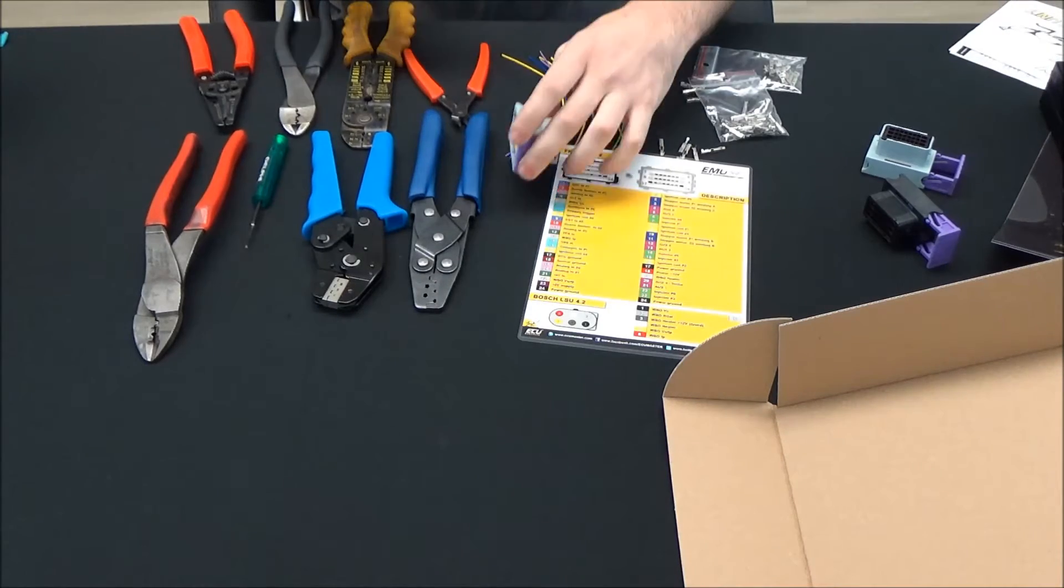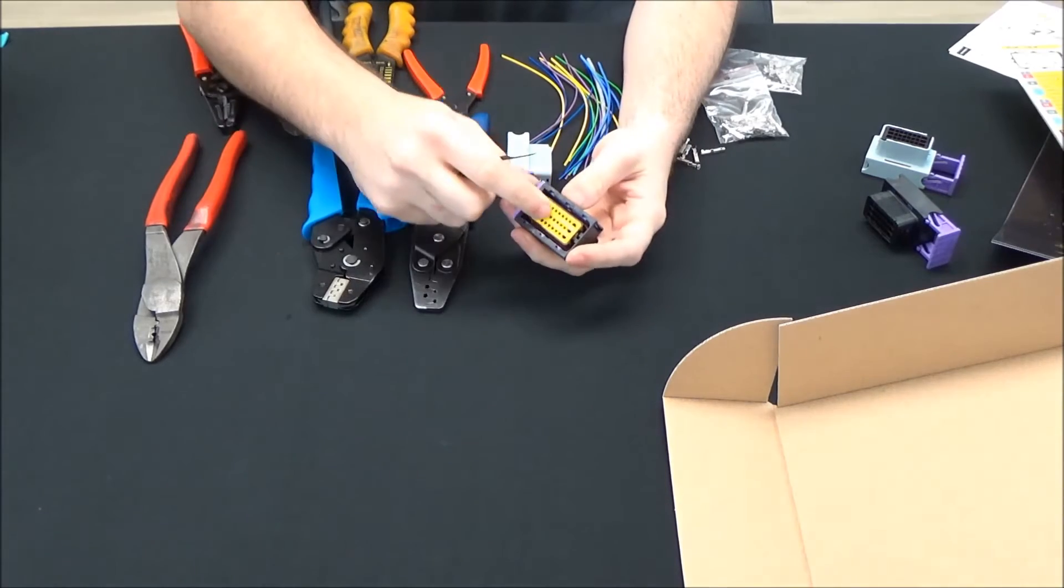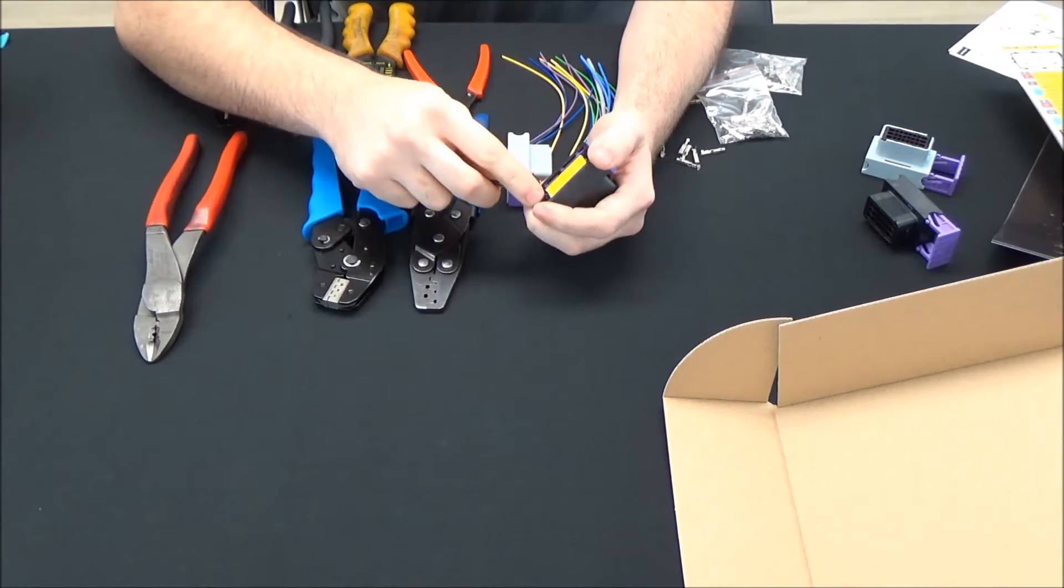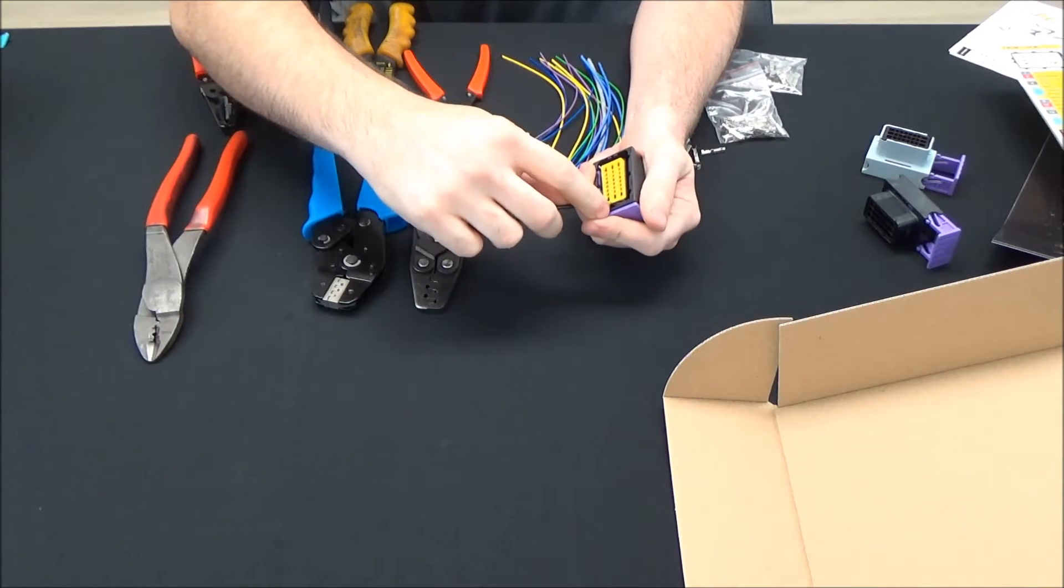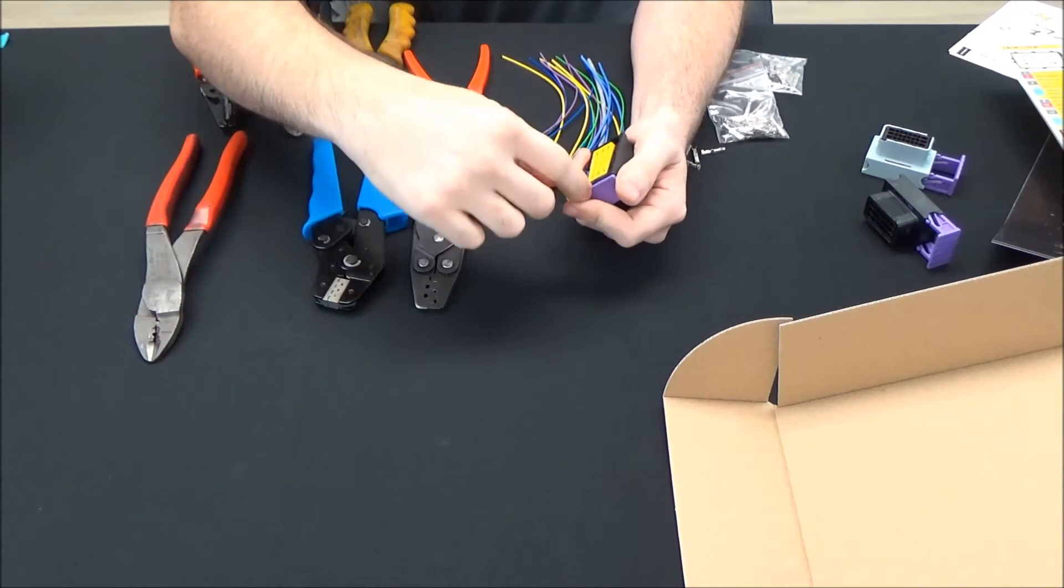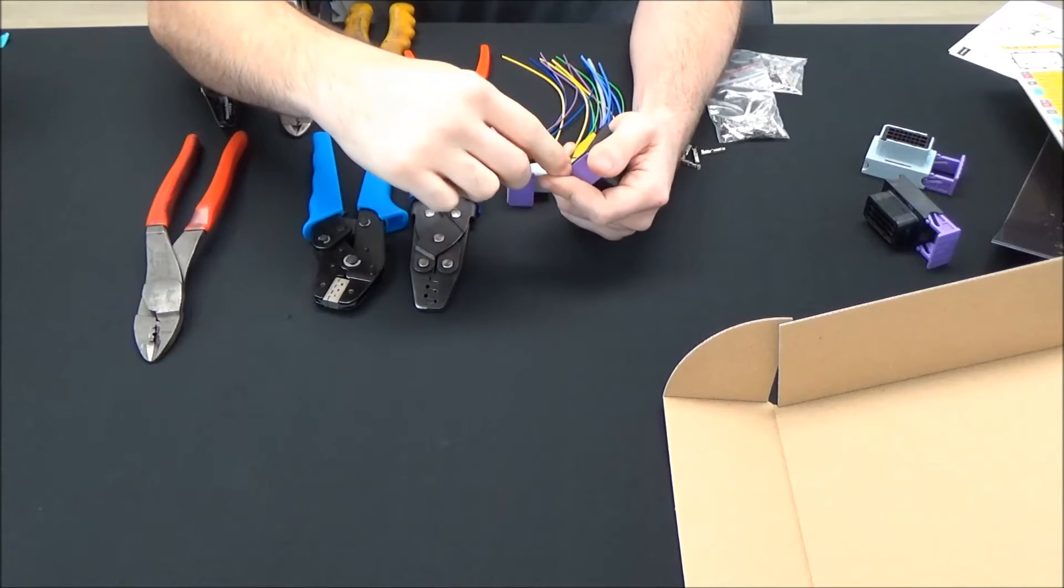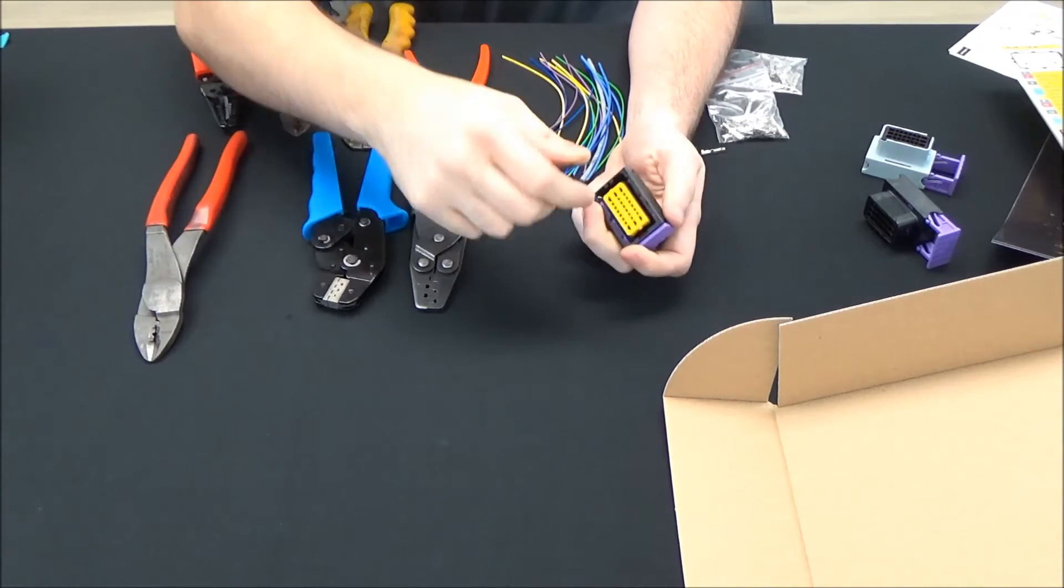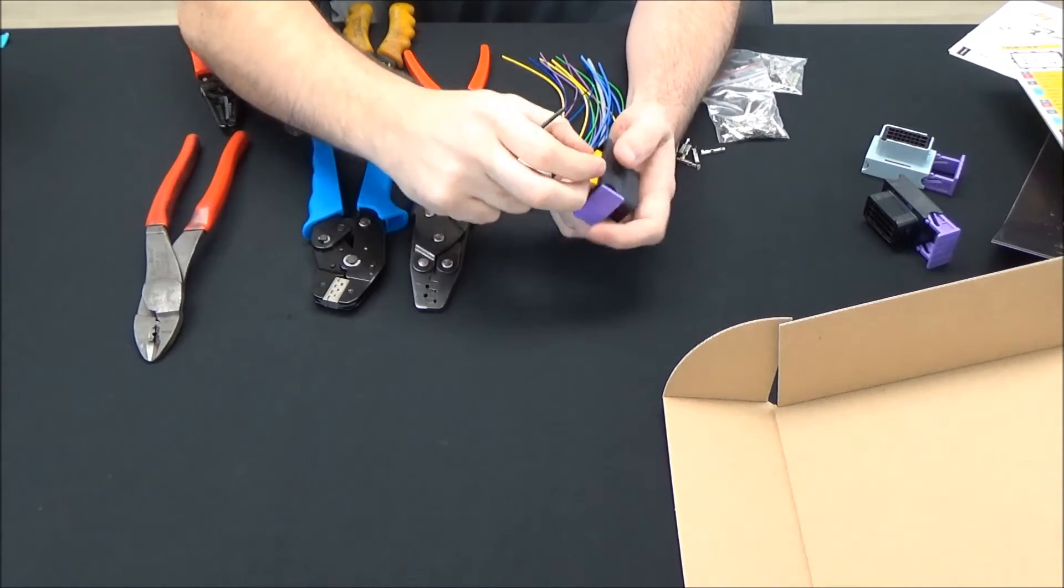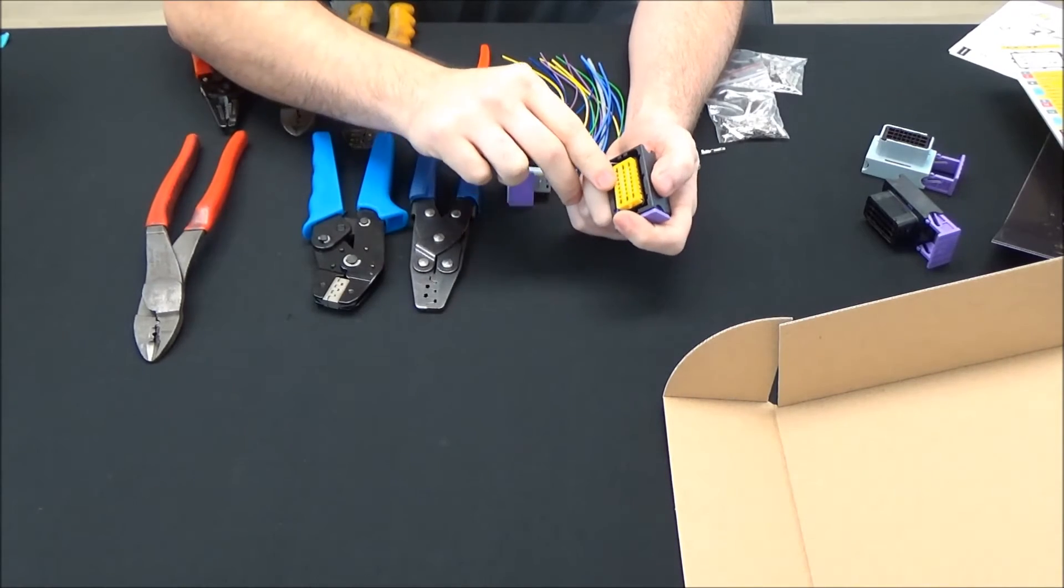So first thing you want to do with the connectors is prepare them to receive a pin. There's a secondary lock here, this yellow lock, that actually holds the pins in place. So what I'm going to do is use a small pick to pop that out. And it has two positions. One is kind of halfway out. The other one is completely removed. I like to remove them completely because I'll use a multimeter to test before I finalize the harness.